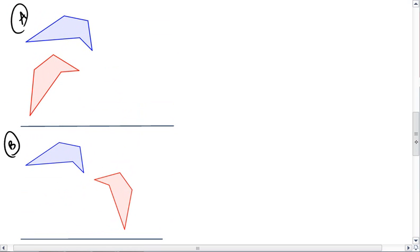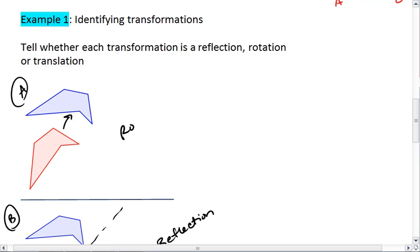Hopefully you see that B is a reflection, that A is a rotation.